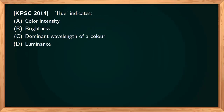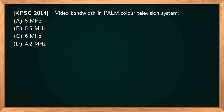In television engineering, hue means tint. It represents the predominant spectral color of the received light. The color of any object is distinguished by its hue or tint. The correct option is the dominant wavelength or frequency of a color.